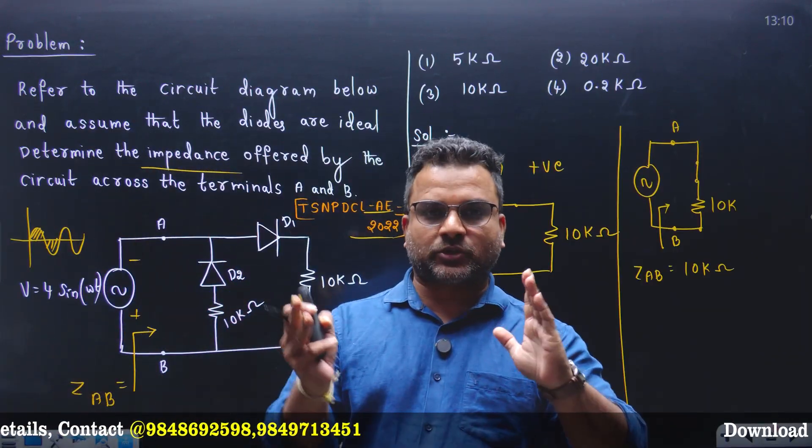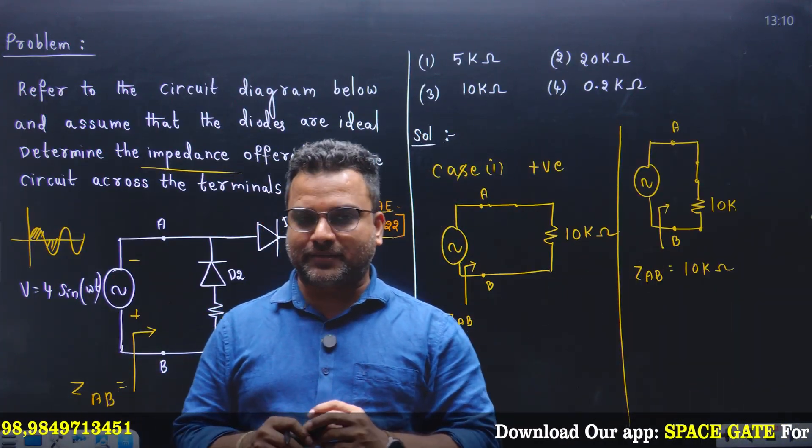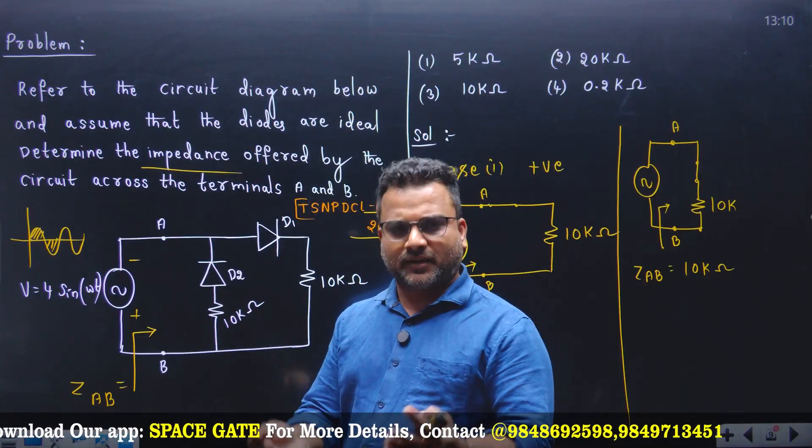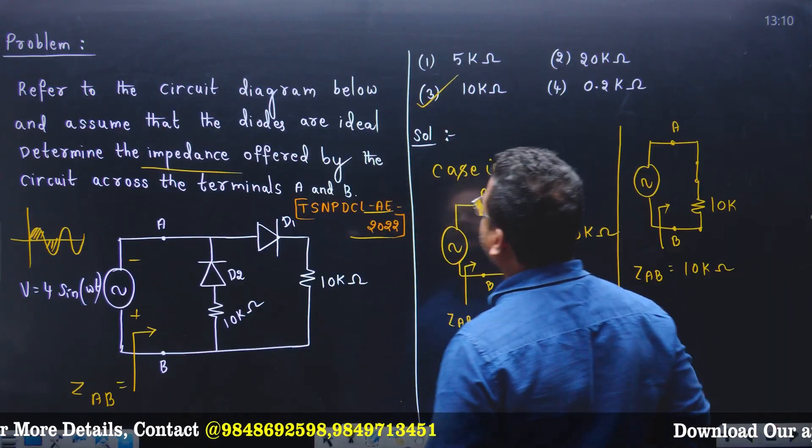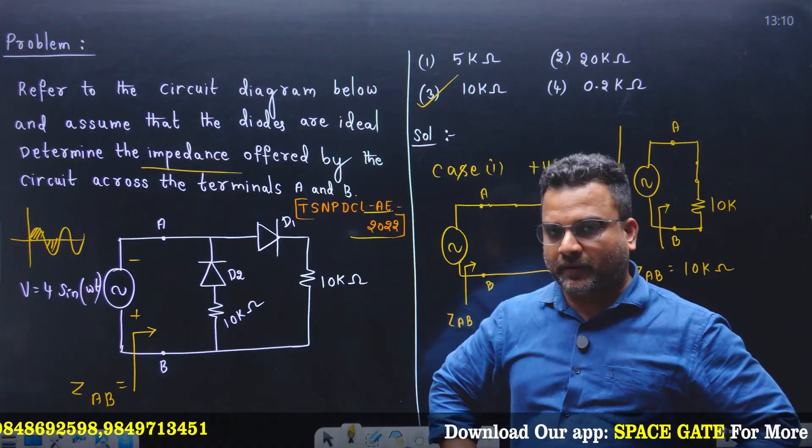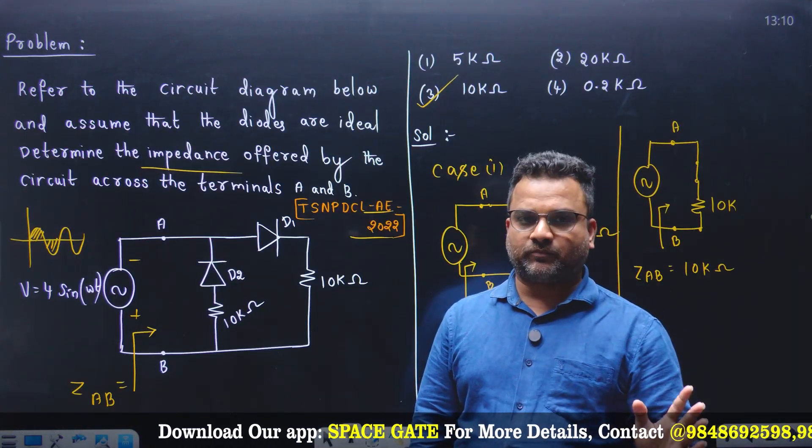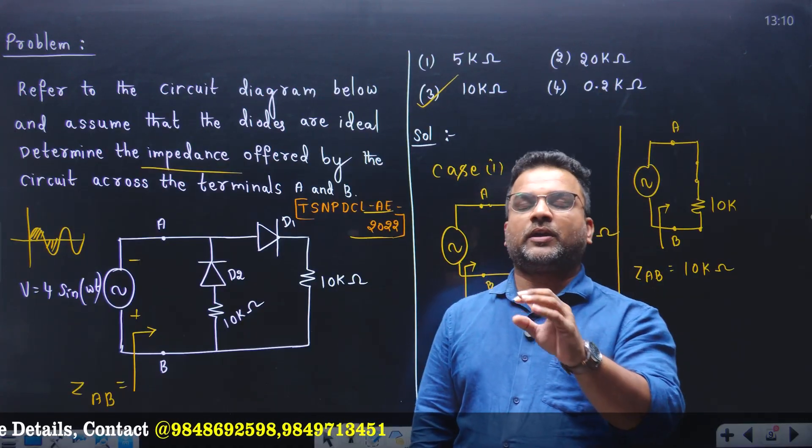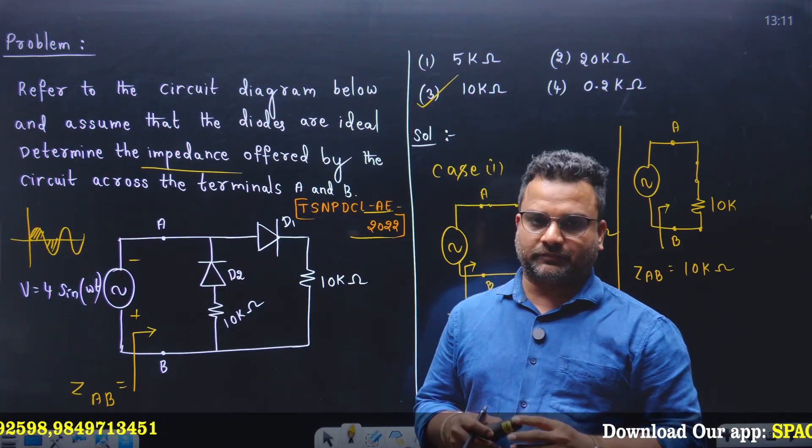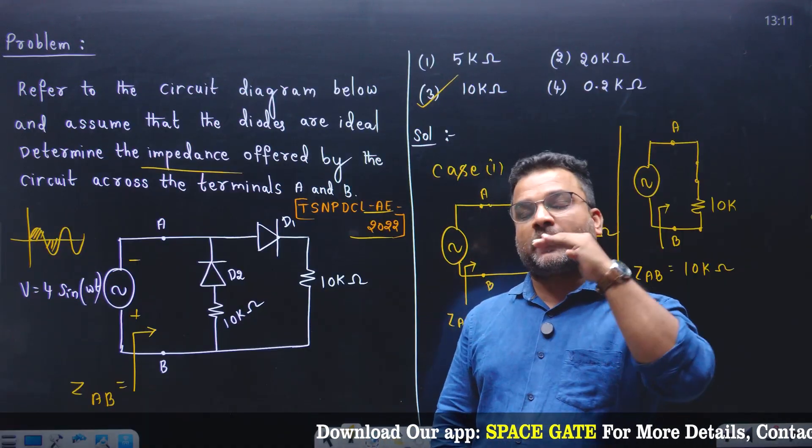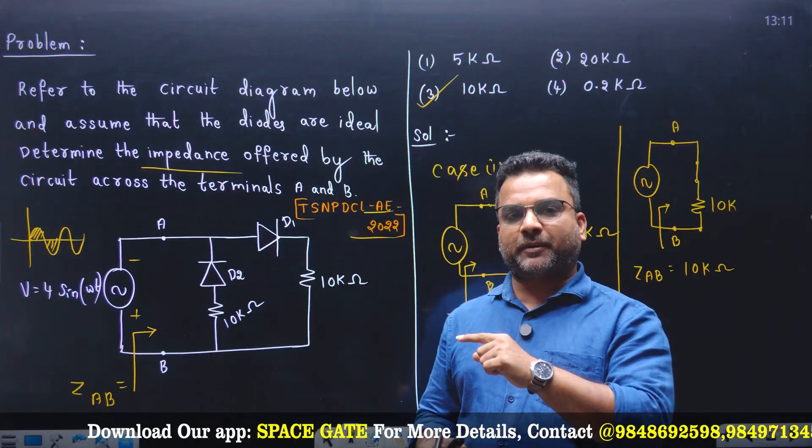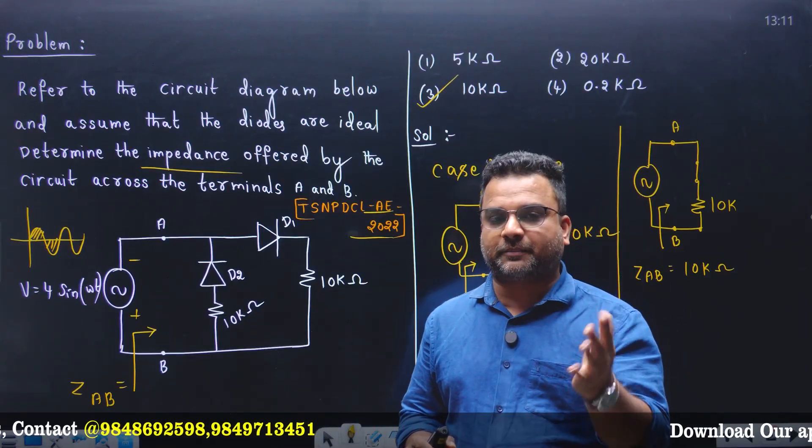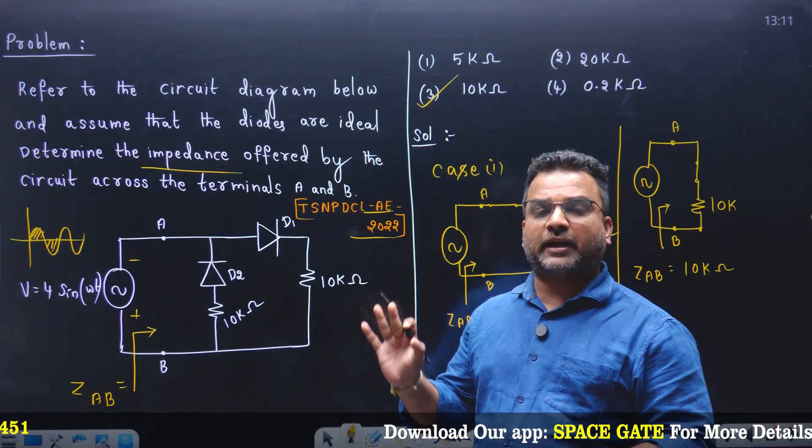The impedance offered by this circuit at the A B terminal is 10 kilo ohms. When you take a full sinusoidal waveform, during positive half cycle 10 kilo ohm, negative half cycle 10 kilo ohm. Hence the impedance offered at the A B terminals in this circuit for a given AC input is 10 kilo ohm. Option three is the right answer. It is not like an AE paper is easy. You know sub-engineers paper, JLM paper, even AE paper last 2022, the paper standard is high level. What's our suggestion is prepare at a high level, therefore the paper will be easy.